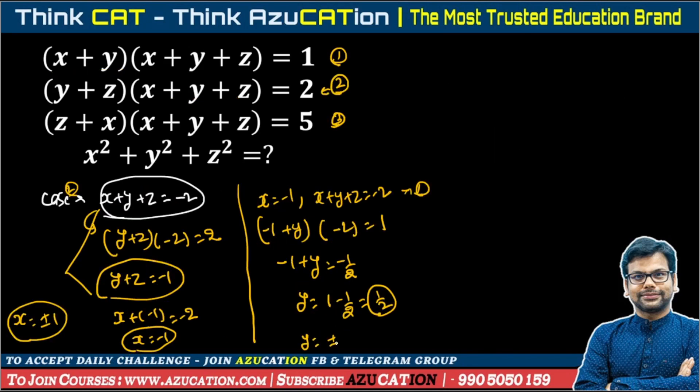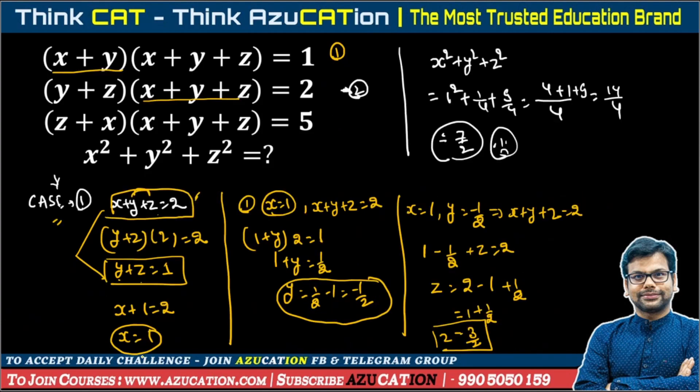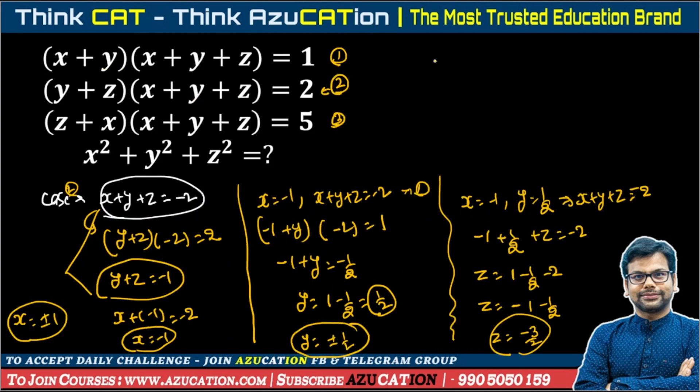So here we can say actually y is equal to plus minus 1 by 2. You have to check all these cases because it's possible that both cases give different answers. Now x is equal to minus 1 for this case. Y value is 1 by 2. When we put in x plus y plus z is equal to minus 2, minus 1 plus 1 by 2 plus z is equal to minus 2. Z is equal to 1 minus 1 by 2 minus 2, so z is equal to minus 1 minus 1 by 2, which is minus 3 by 2. But in case 1 if you recall it was plus 3 by 2. So finally what values did we get? X is equal to plus minus 1 from both cases, y is equal to plus minus 1 by 2, and z is equal to plus minus 3 by 2.